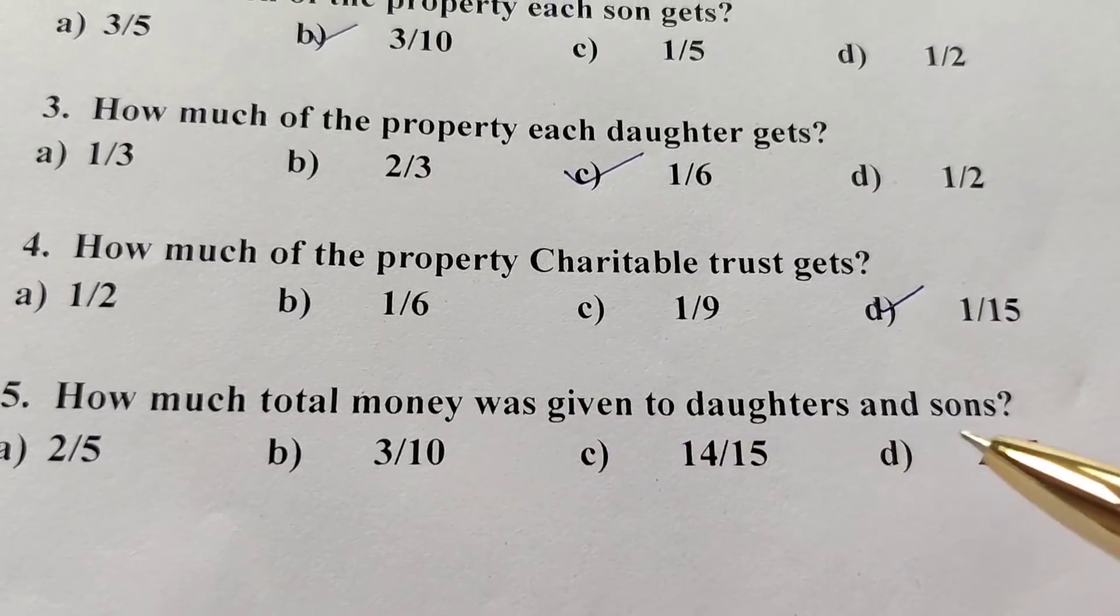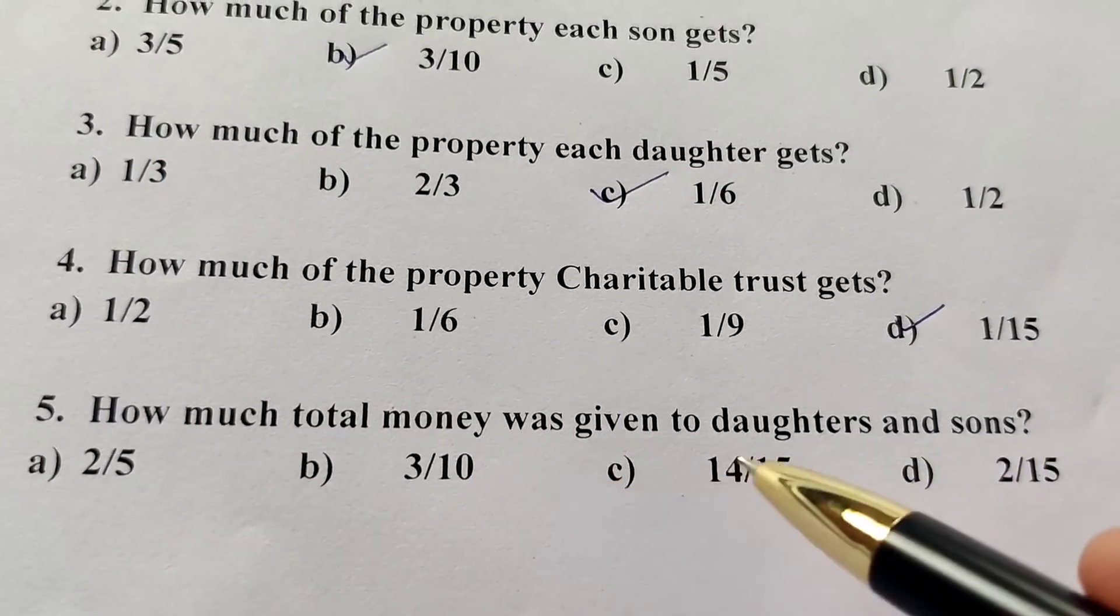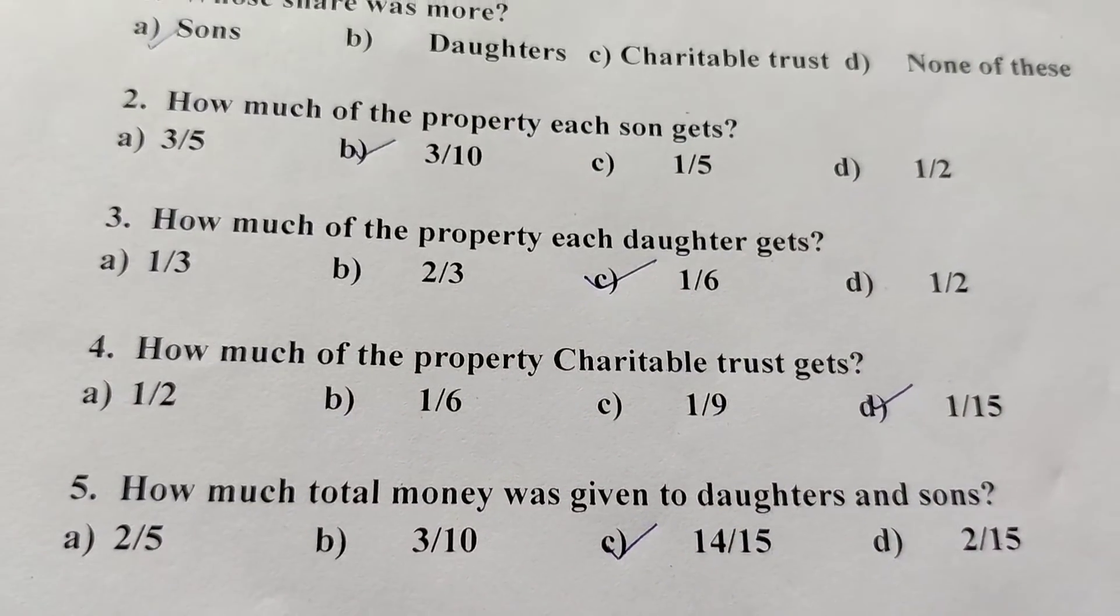How much total money was given to the daughters and sons? 14/15. We leave the last 1/15. Here it is. Pay attention.